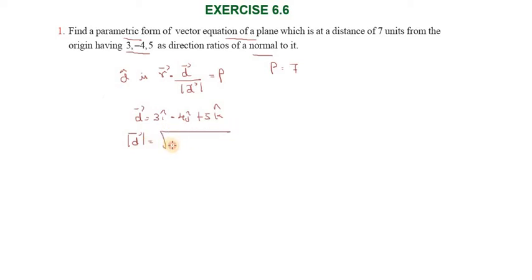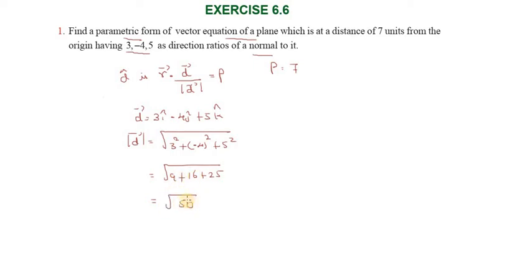The modulus of d vector equals the square root of 3 squared plus (minus 4) squared plus 5 squared, which equals the square root of 9 plus 16 plus 25, giving root 50. Simplifying, root 50 equals root of 25 into 2, which equals 5 root 2.